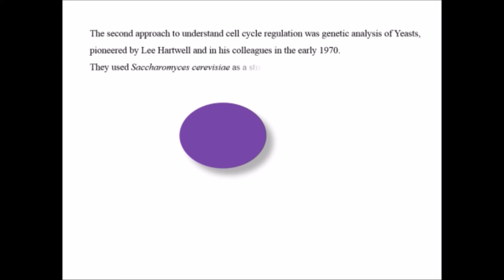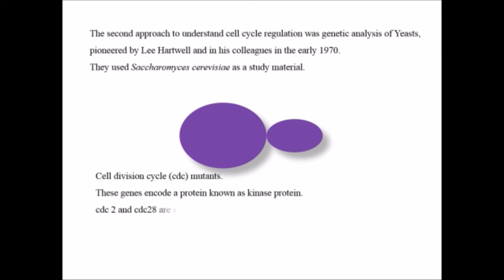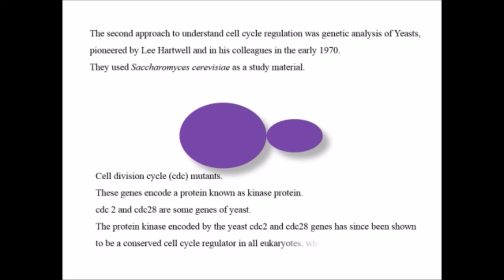Further research was also continued. What they concluded: the second approach to understand cell cycle regulation was genetic analysis. They have chosen Saccharomyces cerevisiae as a study material. During their budding, what they saw was that cell cycle is regulated by a mutant known as CDC, which is cell division cycle, and this gene encodes a protein known as a kinase protein. Further they have identified two genes, CDC2 and CDC28, as the genes in the yeast.